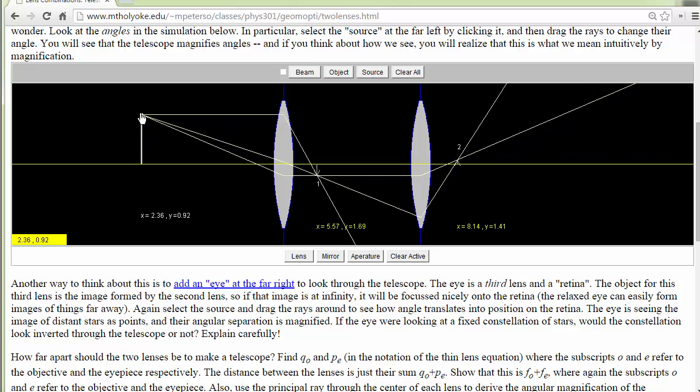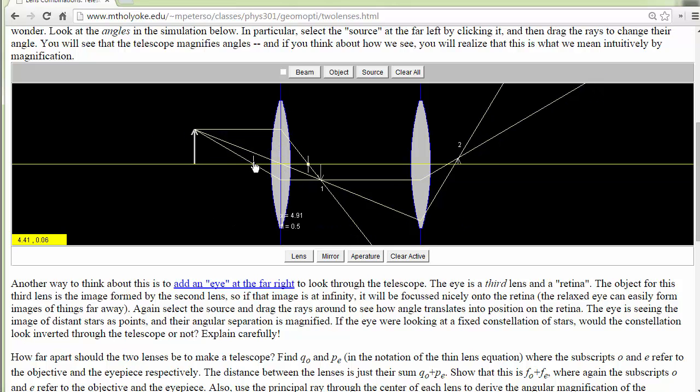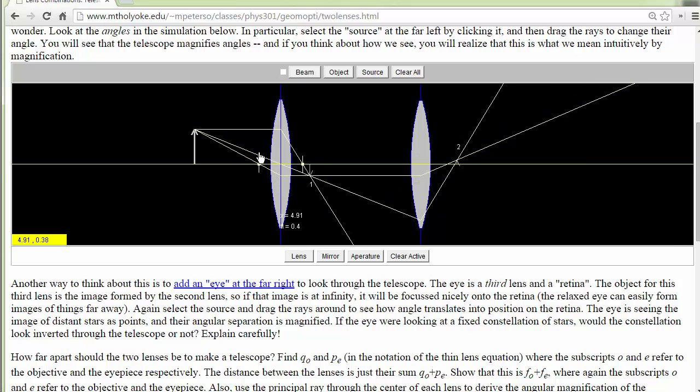And you can grab these and move them around a bit. You can grab the lenses, and if you grab here, you can change the focal length of the lens. Okay, if you pull it through, you make it a diverging lens instead of a converging lens.